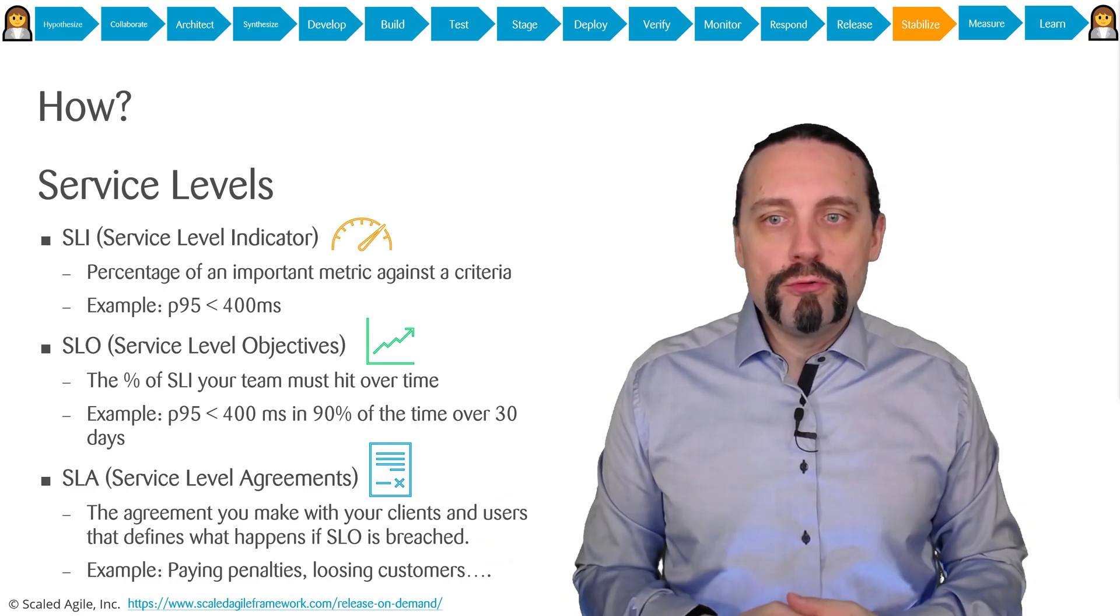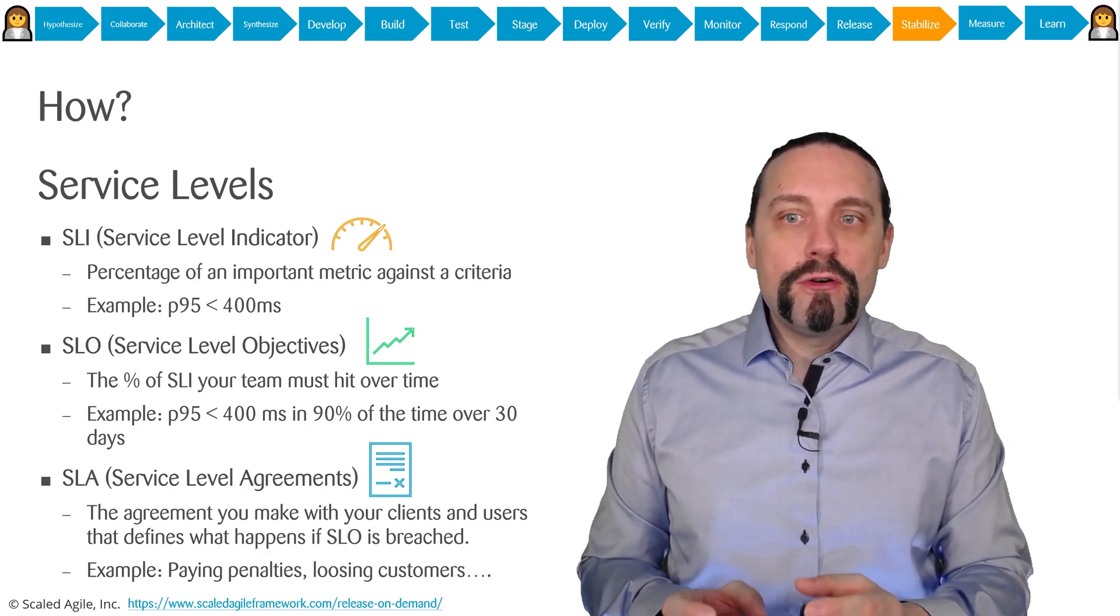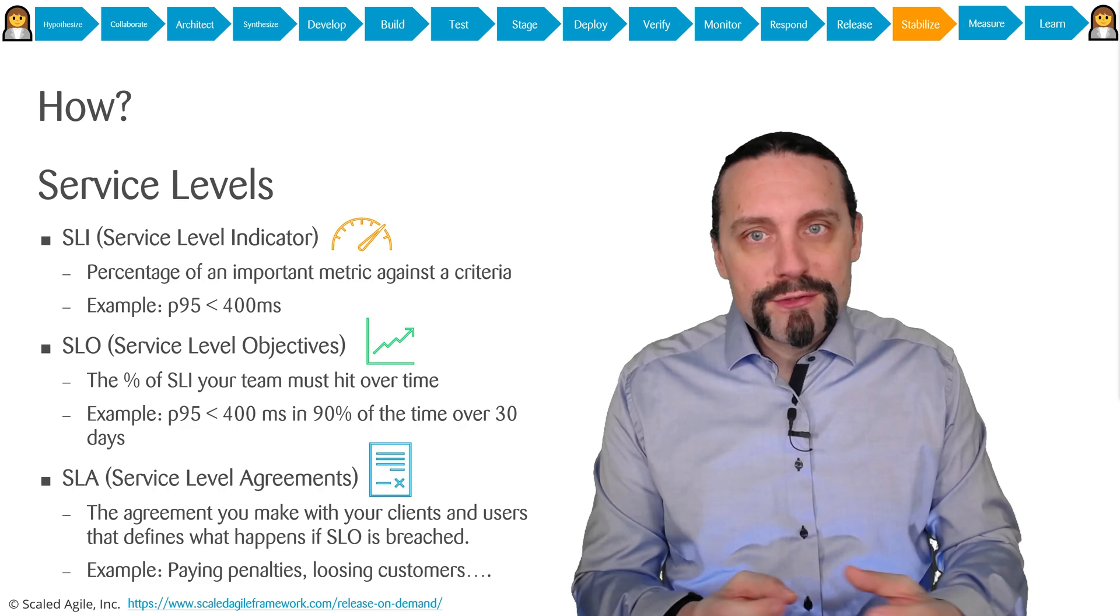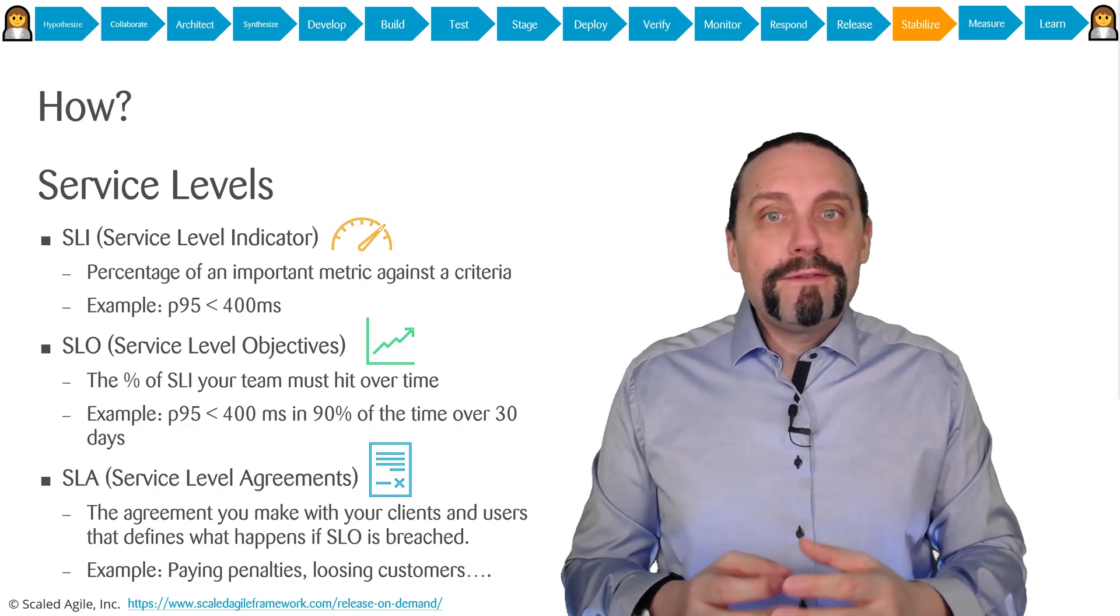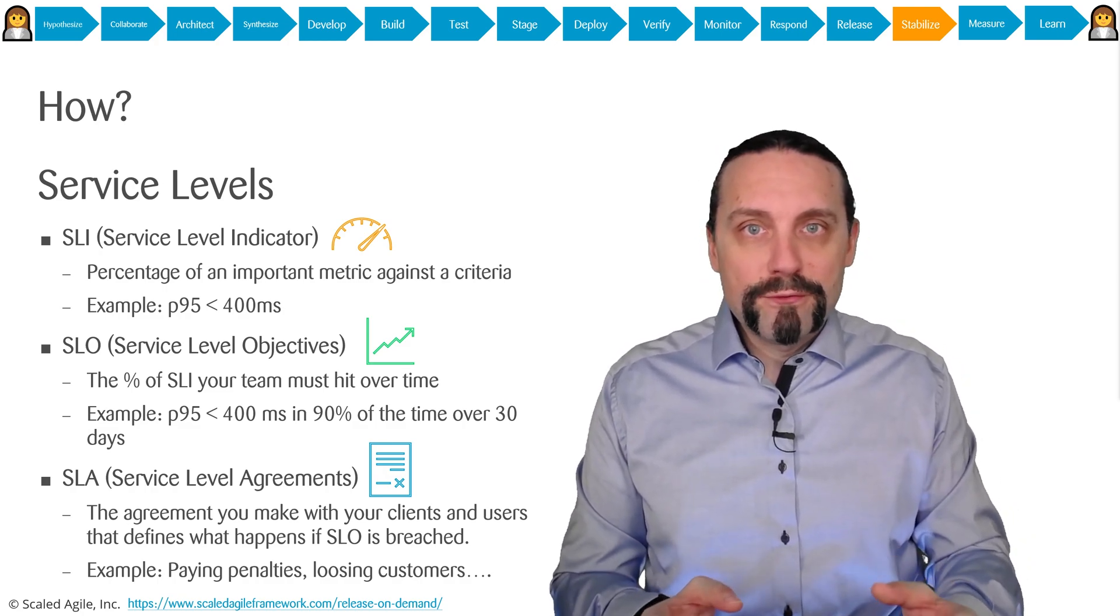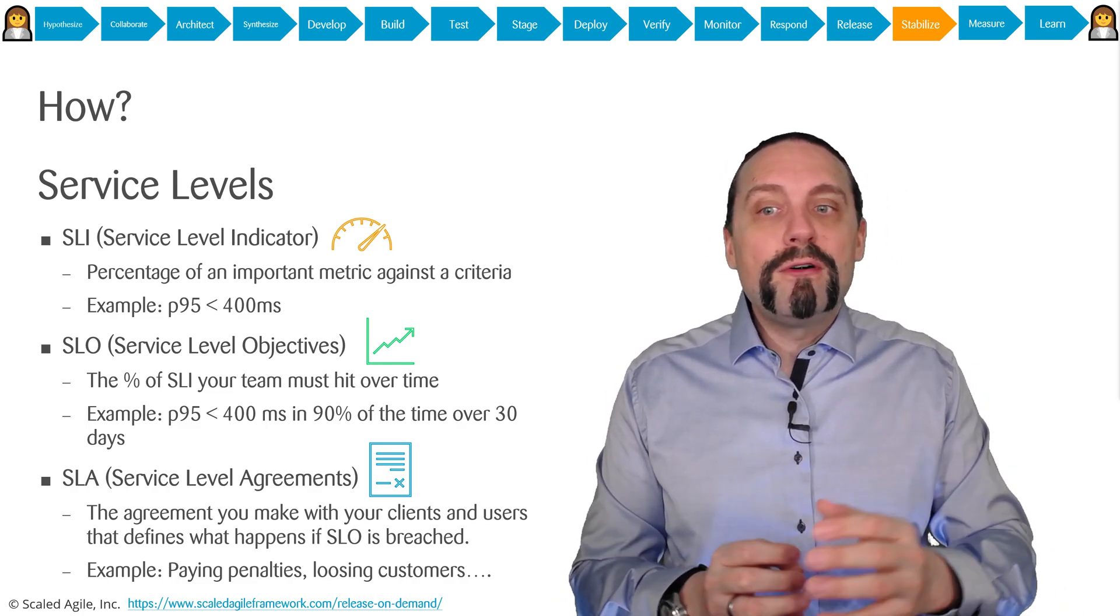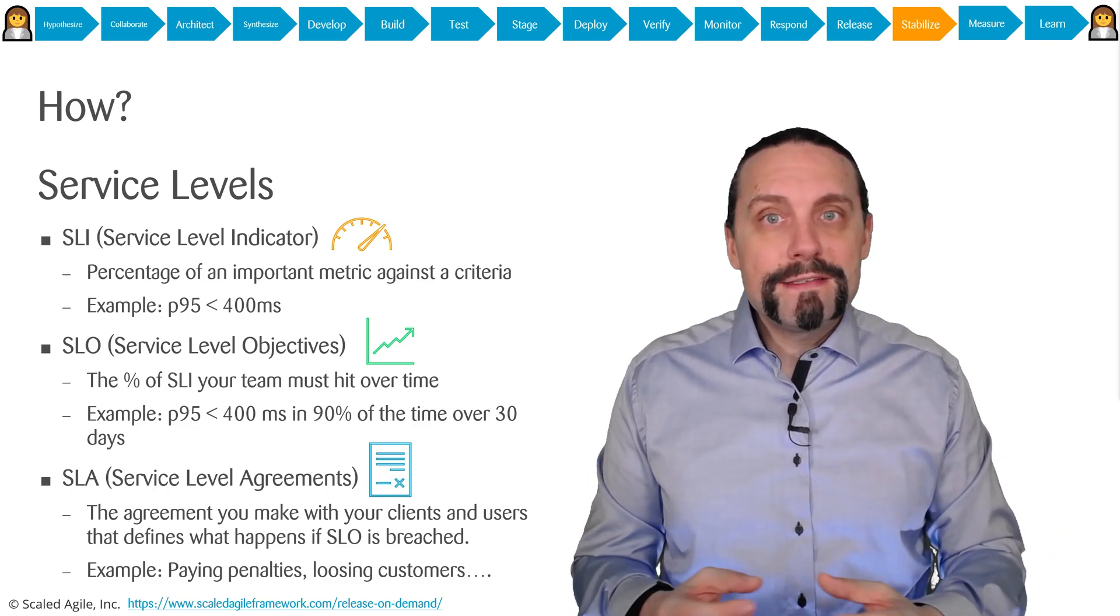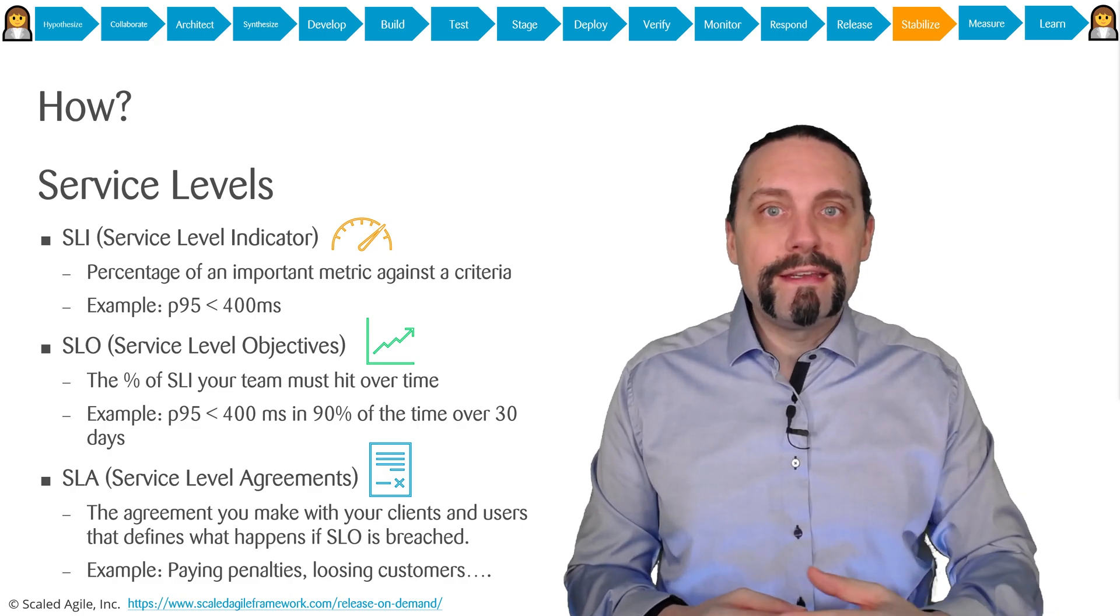An SLO or service level objective is the percentage of a service level indicator your team must hit over a certain time. An example for that would be: in the 95th percentile we want to have a response time smaller than 400 milliseconds in 90 percent of the time over the next 30 days. This is a service level objective based on a service level indicator.